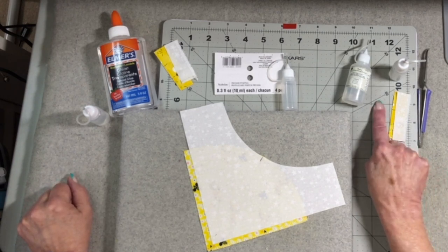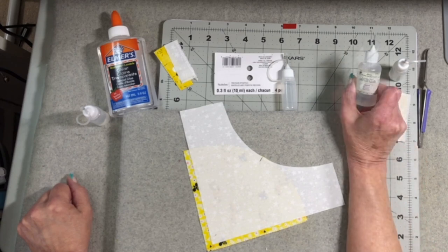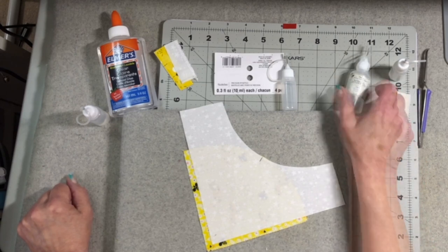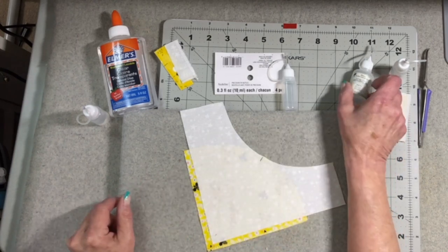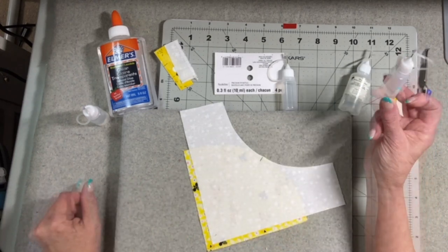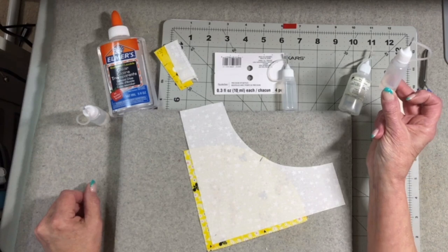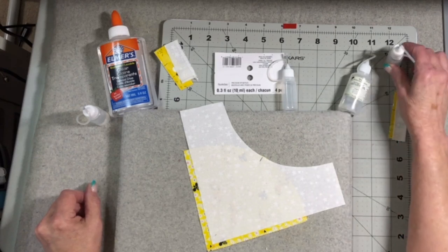In this corner we have Acorn Seamalign Glue. That's what I normally use. My tip broke on the top so what I did was I put it into a Recollections Precision Tip bottle. So that's in this corner.